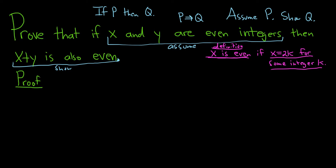Okay, let's do this proof. We'll start by writing down our assumption, our p. So suppose x and y are even integers. Okay, so that's our assumption for p, that's our p.